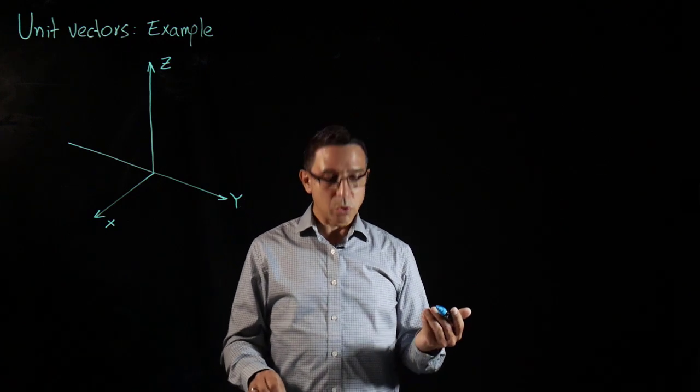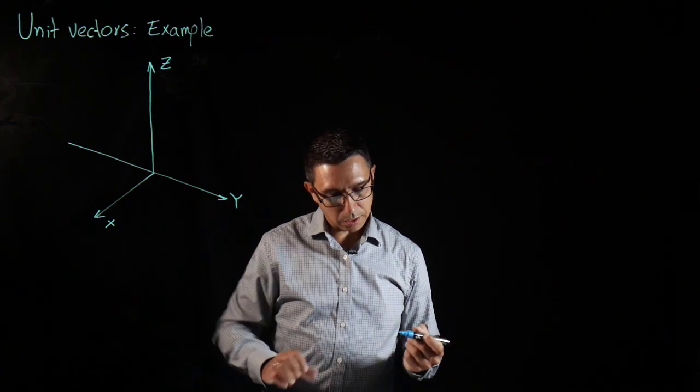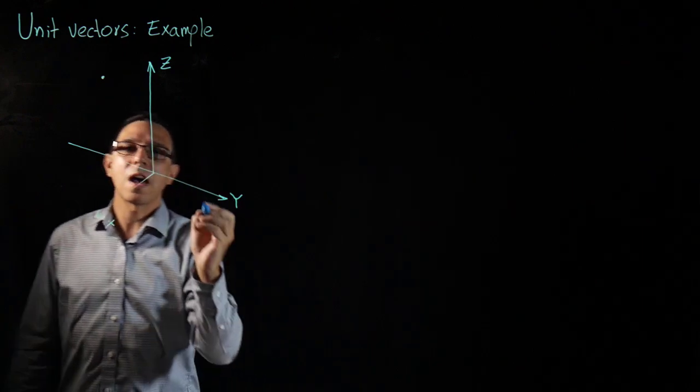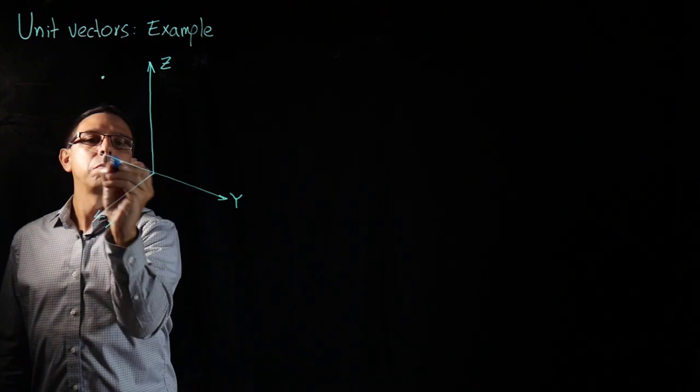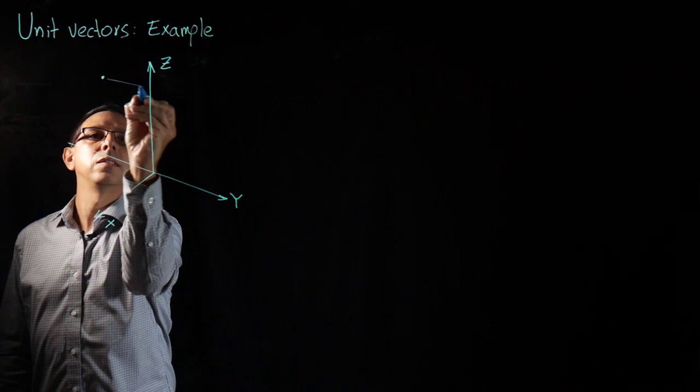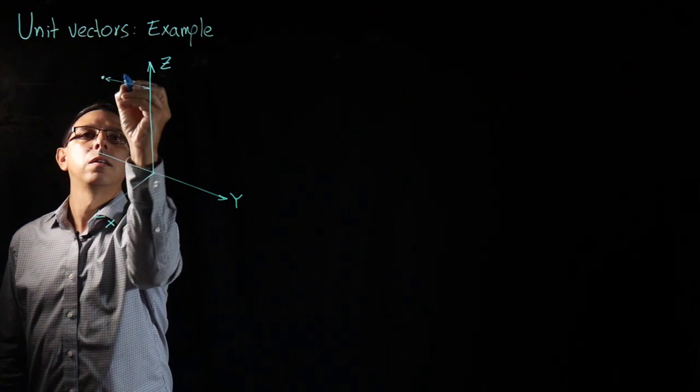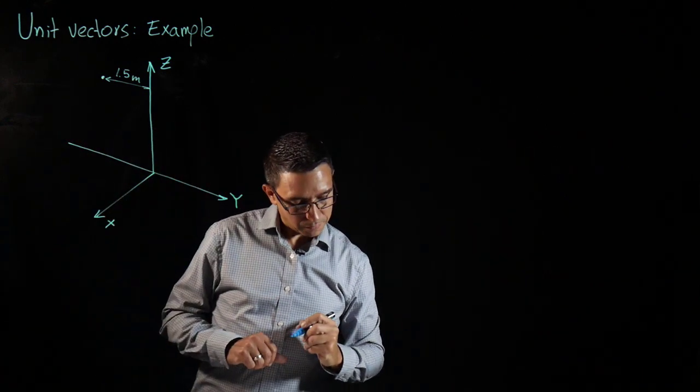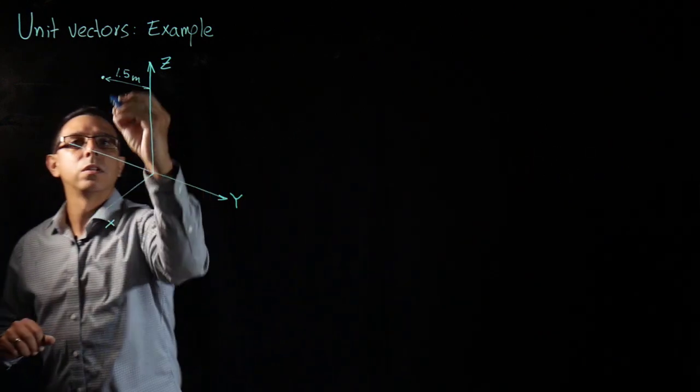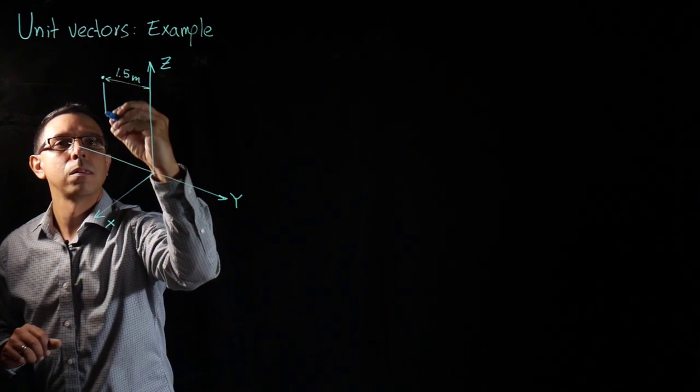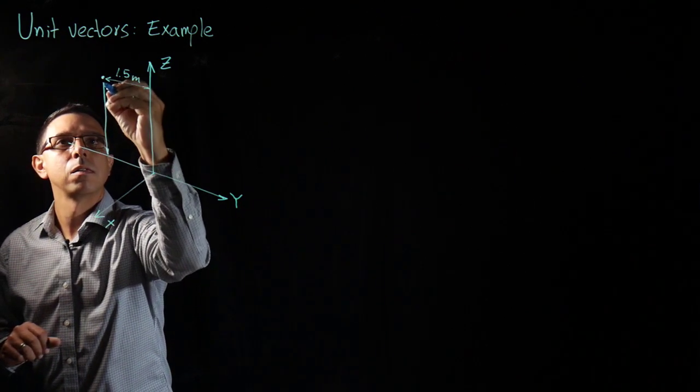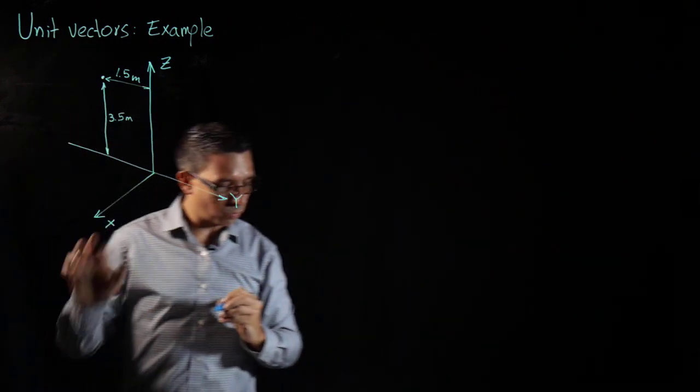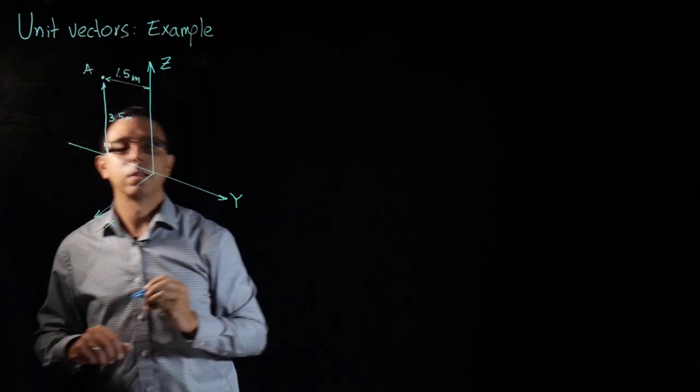Now, we're interested in two points, points A and B. And point A is somewhere in this direction. It is one and a half meters perpendicular to the z axis. So this distance is 1.5 meters. The distance to the y axis is 3.5 meters. This is 3.5 meters. And as I said before, this will be point A.